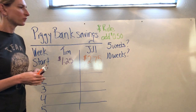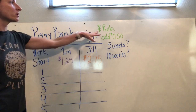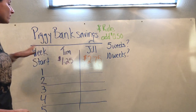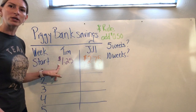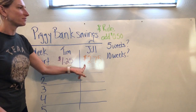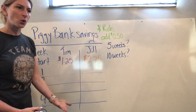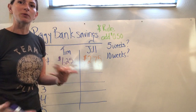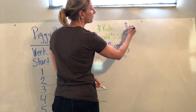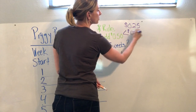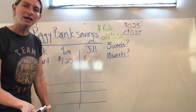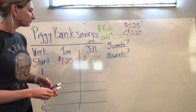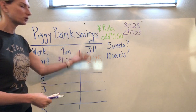Let's work some independent practice problems together. We have a piggy bank savings problem where the rule is adding 50 cents each time. Tim is starting with $1.25 and Jill is starting with $2.75. Each week we add 50 cents to their total. You can write out the problems and do the addition each time, but 50 cents is made up of two quarters — 25 cents each — so you can add 25 and then add 25 again to get the next week's total. Tim will be the purple marker and Jill the orange marker.